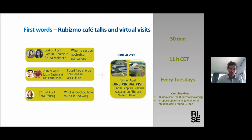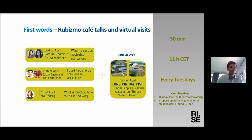In April we had a short introduction on what carbon neutrality in agriculture is. We've seen it's both about reducing carbon emissions and storing more carbon with different agricultural practices. Last week we focused on fossil-free energy, which was about reducing emissions, and today Tula will talk more about increasing carbon in the soil. All the videos will be available on the YouTube channel in a few weeks.